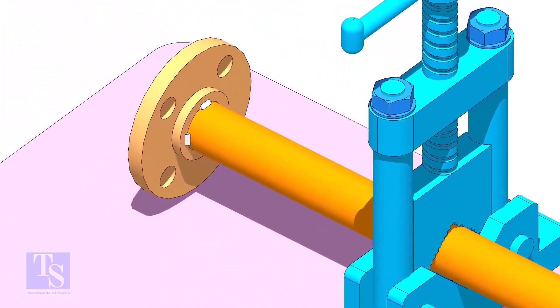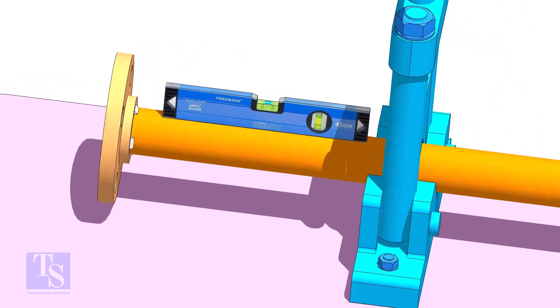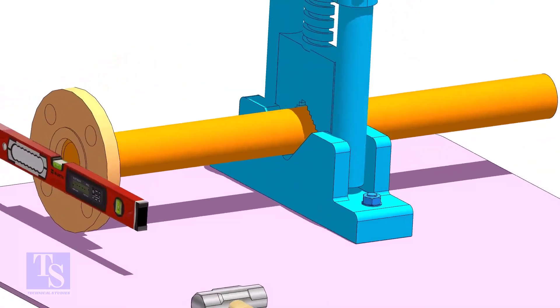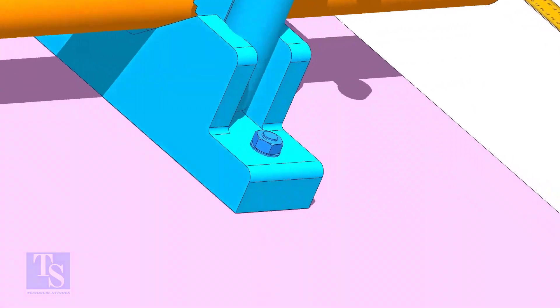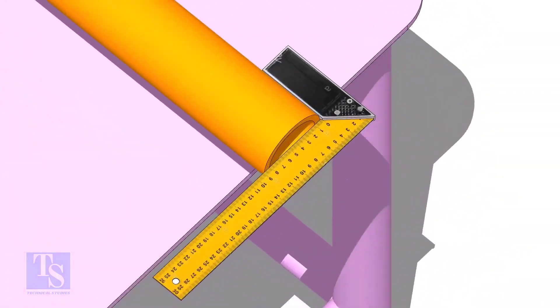Level the pipe and the flange. Make the pipe end square. Don't fit up a bevel end pipe in a socket weld fitting.